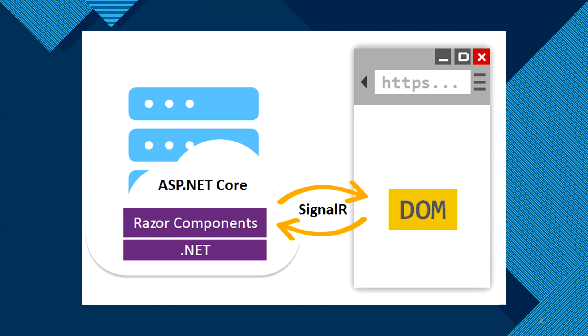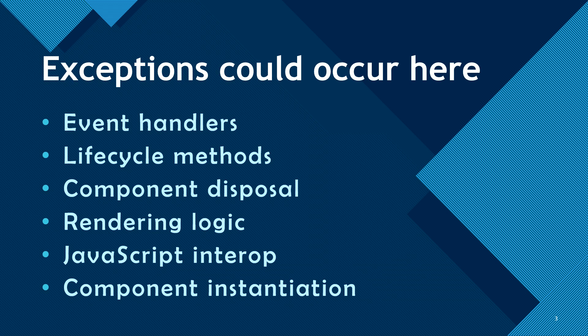The second thing I'm going to talk about is how you can troubleshoot these exceptions. Exceptions can happen in different places — on event handlers like an onClick event, on lifecycle methods like OnInitialize, when you leave the page, when you're trying to dispose a component, in rendering logic when you don't check if a collection is null before rendering it in HTML, when calling a JavaScript function, or when using dependency injection. I'll throw exceptions in all these places and show how you can troubleshoot them using try/catch blocks.